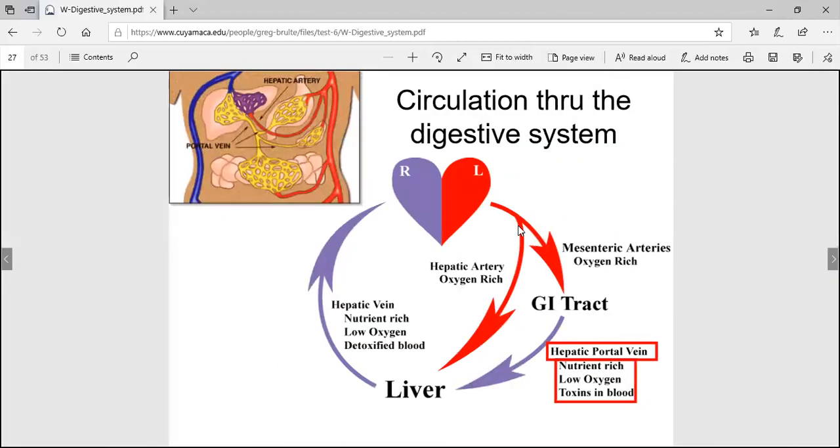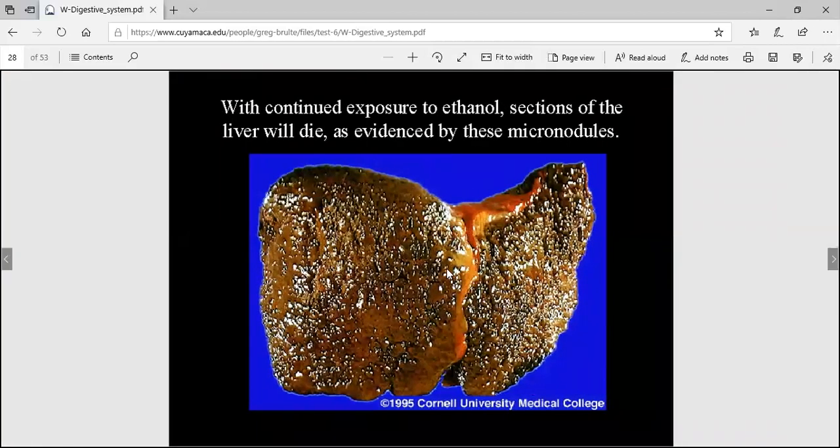Your hepatic artery is where most of your oxygen comes from to your liver. There is a hepatic portal vein bringing in nutrients that have been absorbed from the GI tract. It doesn't have much oxygen because it's a vein. So maybe 25% of your oxygen comes from there, but most comes from your hepatic artery. The hepatic portal vein is nutrient rich but low oxygen.